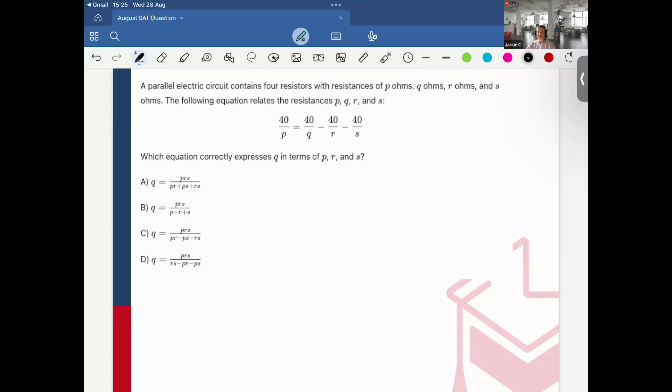So we also have this similar question here, which says a parallel circuit contains four resistors with resistances of p-ohms, q-ohms, r-ohms, and s-ohms. The following equation relates the resistances PQR and s. Quick scan of the answer choices, I can see that 40 does not appear in any of them. So what I'm first going to do is multiply each side of the equation by 1 over 40. And so since there's signs in between, the subtraction signs, it's going to distribute to all of these. The 40s would cancel. So this would read 1 over P is equal to 1 over Q minus 1 over R minus 1 over s. And then I want everything in terms of Q, so I'm going to do that. And I put 1 over Q is equal to 1 over P plus 1 over R plus 1 over s.